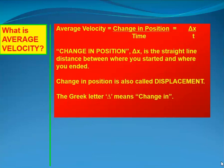Velocity is defined as change in position over time, written as delta-x over t. That triangle is the Greek letter delta, which in science means 'change in.' Change in position, delta-x, is the straight-line distance between where you started and where you ended. Change in position is also called displacement.